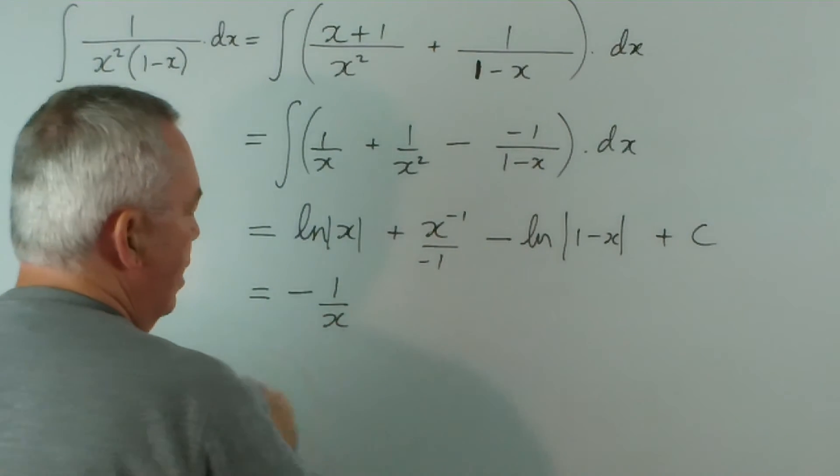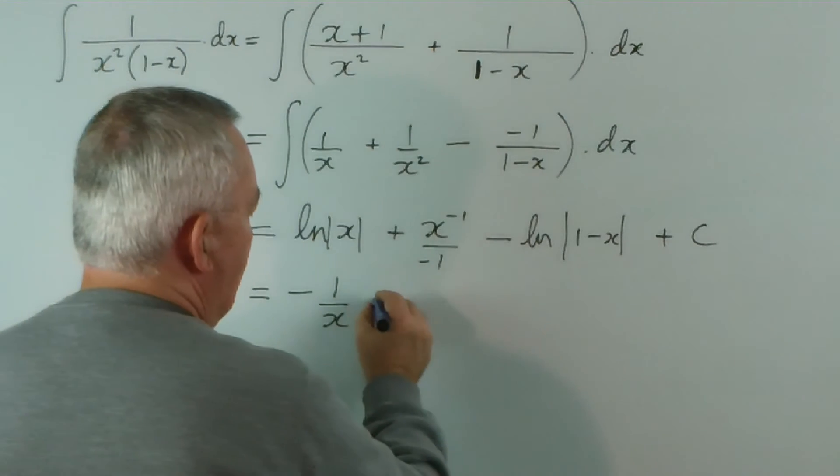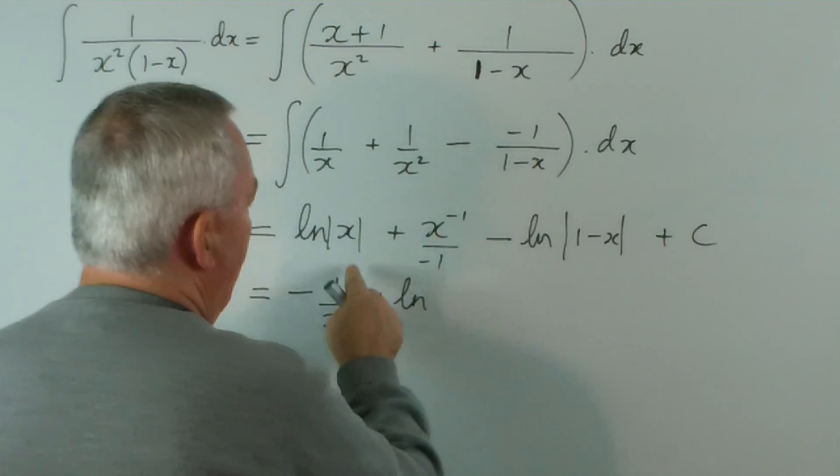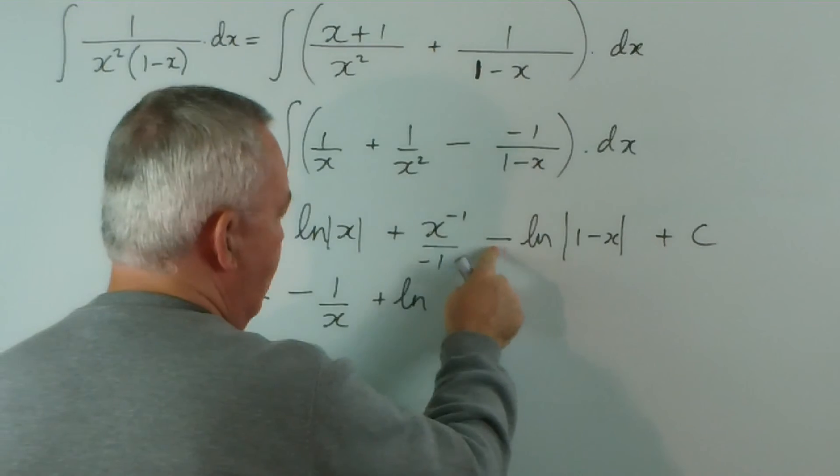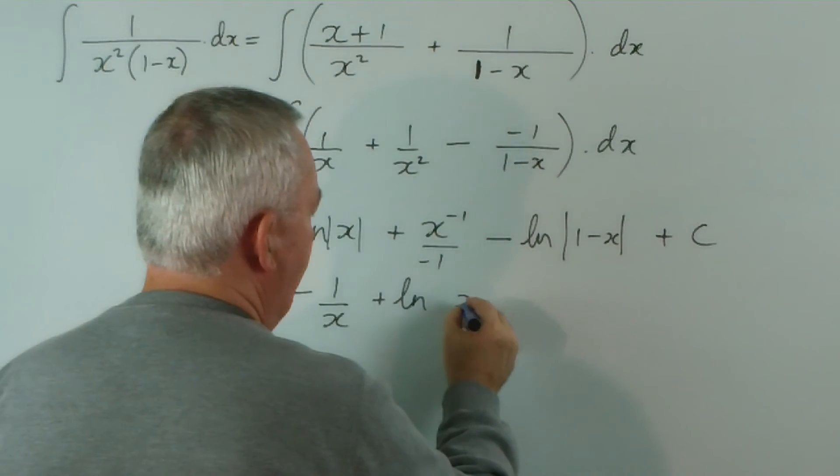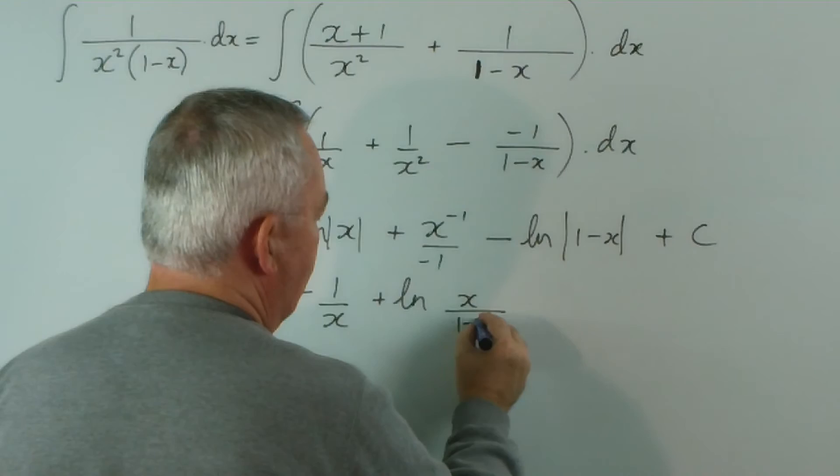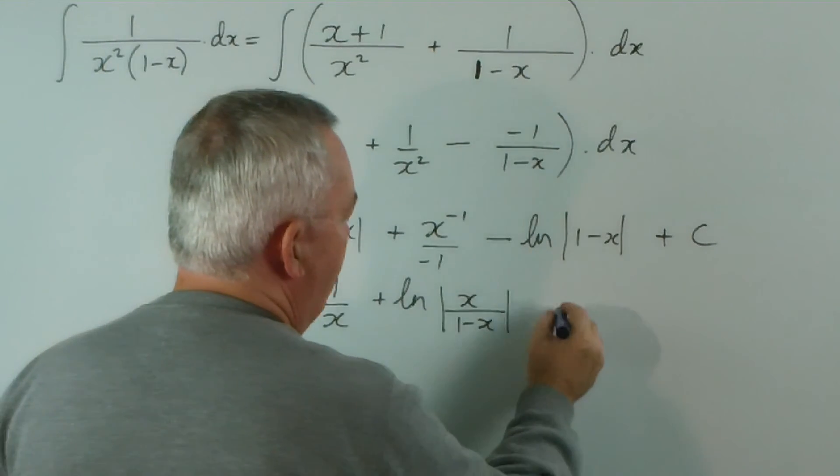Plus the logarithm... that minus the logarithm of this minus the logarithm of this is the logarithm of x over 1 minus x, plus c. And there we have it.